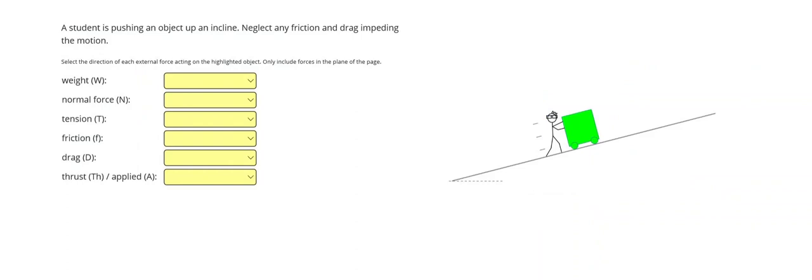One more example. Let's look at a student is pushing an object up an incline. All right. Let's start with that weight acting straight down. And our normal force, perpendicular to the surface. So it's going to slant diagonally up to the left this time to be perpendicular to the surface.